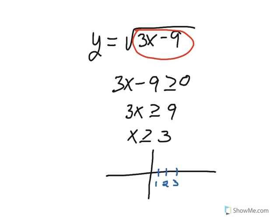It turns out when x equals 3, y is equal to zero. This is a sketch of the graph for y equals the square root of 3x minus 9. Please pause the video and copy this into your notes.